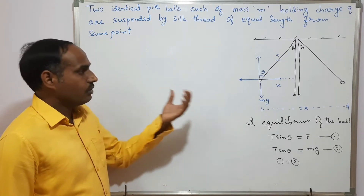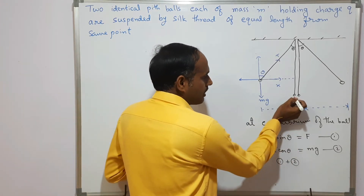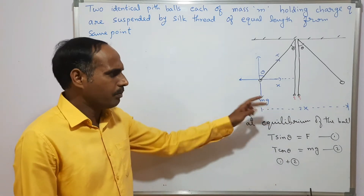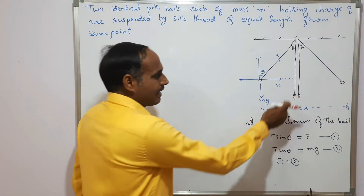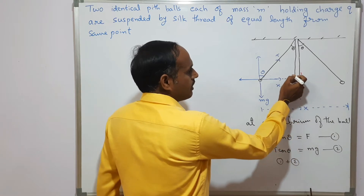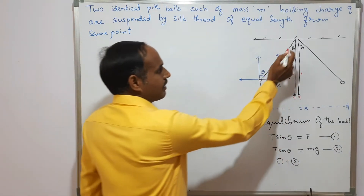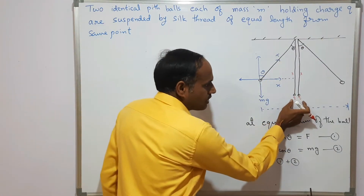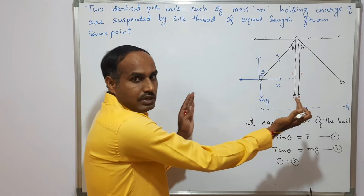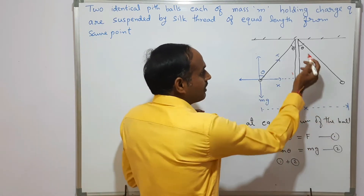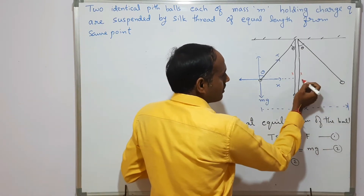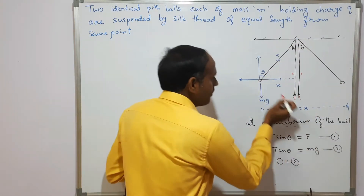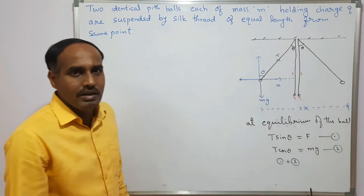I am taking the case of two charged particles of identical charge — same charge and same magnitude, both positive — connected by two strings each of length L to one common suspension point. Because of the same kind of charges, a force of repulsion takes place, and they are displaced to an angle theta from their original position, coming to equilibrium at this angular displacement.